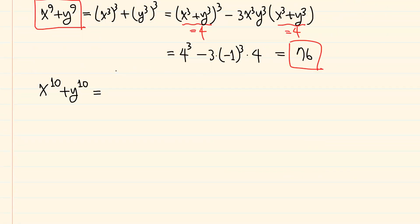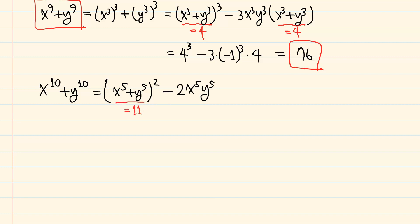Finally, for the power of 10, we use the square of the power of 5, so we have x to the power of 5 plus y to the power of 5 squared minus 2x to the power of 5 times y to the power of 5. This value was obtained as 11, so we have 11 squared minus 2 times minus 1 to the power of 5, which is 123.